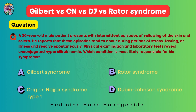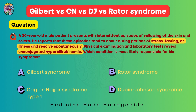Let's practice a few questions. A 20-year-old male presents with intermittent yellowing of the skin and sclera. Episodes occur during stress, fasting, or illness and resolve spontaneously. Lab tests reveal unconjugated hyperbilirubinemia. Unconjugated bilirubin is increased and symptoms appear after stress or illness — both point toward Gilbert syndrome. The correct answer is option A.